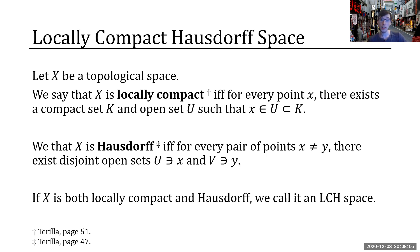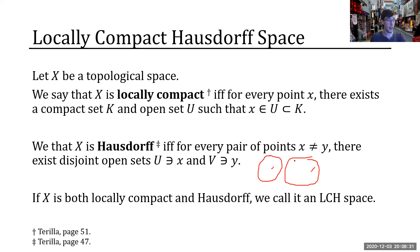If you can do this, we call that local compactness. Similarly, we say that X is a Hausdorff space if for any two points in your space I can surround them with disjoint open sets — almost like separating the two points with bubbles. If you have both local compactness and the Hausdorff property, we say the space is a locally compact Hausdorff space, or an LCH space.